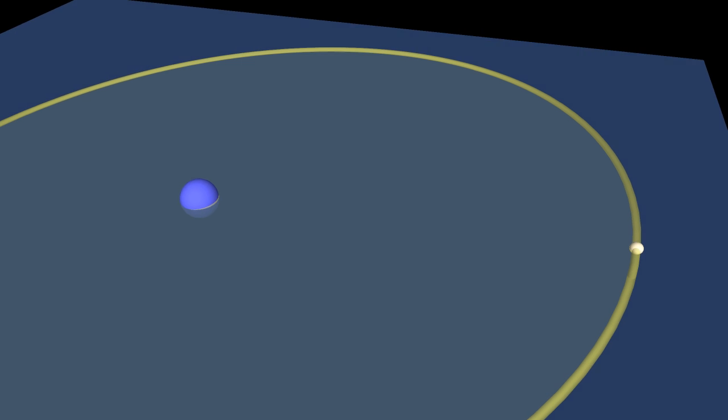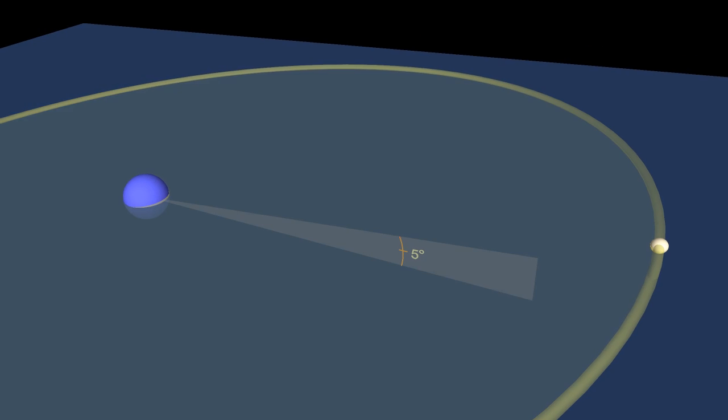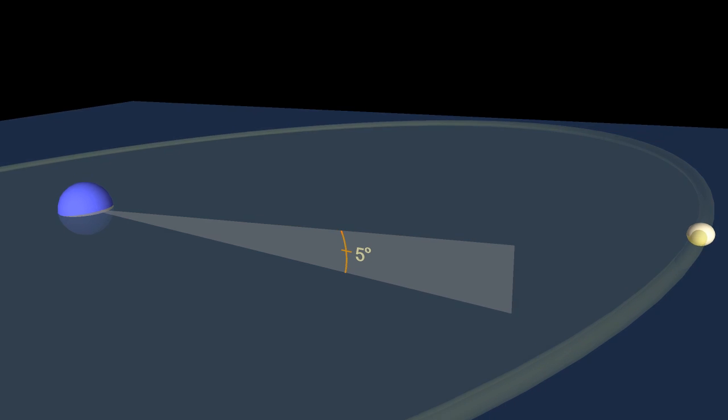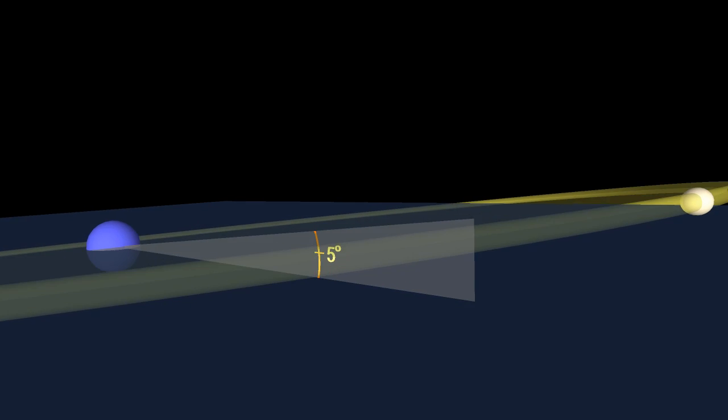The Moon's orbit is tilted approximately five degrees from this plane, and so its position in the sky varies from the ecliptic more than those of the planets.